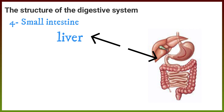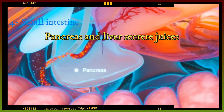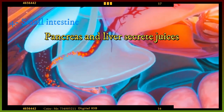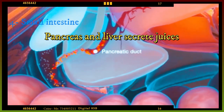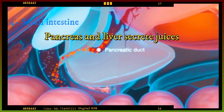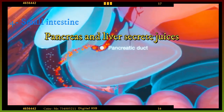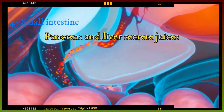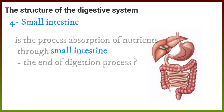What is the function of the pancreas and liver? The pancreas and liver secrete juices that flow into the small intestine. These juices help in breaking down the food into nutrients. The absorption of nutrients through the small intestine is not the end of the digestion process.